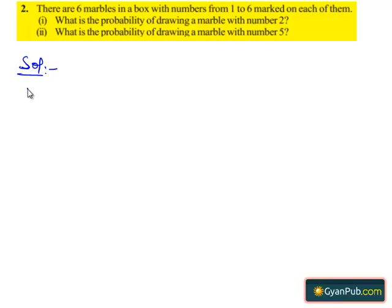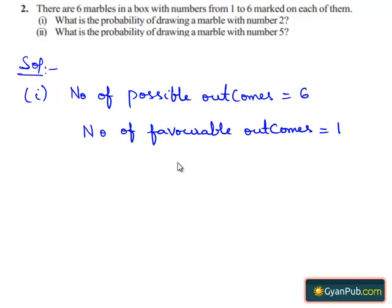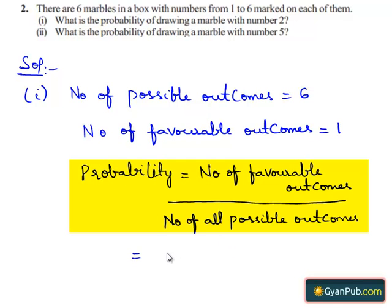Let us find the solution for the first part. Here they have given 6 marbles with numbers 1 to 6. Therefore, the number of possible outcomes is equal to 6. Since they are marked from 1 to 6, the number of favorable events of drawing a marble with number 2 is equal to 1. So probability is defined as the ratio of the number of favorable outcomes by number of possible outcomes, which is equal to 1 by 6.